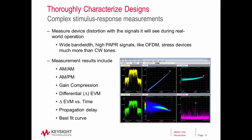Some of the measurements you can get from these stimulus response results are things like AM to AM, AM to PM, gain compression, and what we call differential EVM or delta EVM — and that result versus time as well. This shows you a vector error comparison without any demodulation. It can also be used to align signals in time, measure propagation delay, and determine the best fit curve for some of these results.